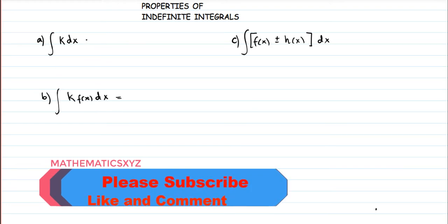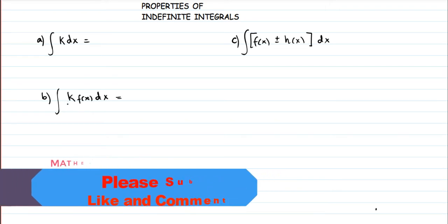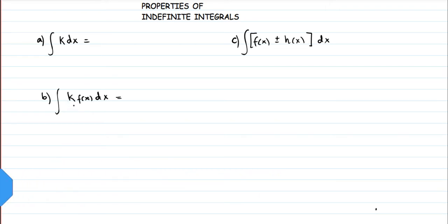We start with the constant multiple rule: we want to know how to find the integration of a constant multiplying a function. Whenever we have a constant multiplying a function, we put the constant outside and then solve the integral without that constant.